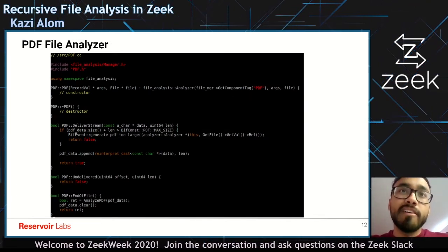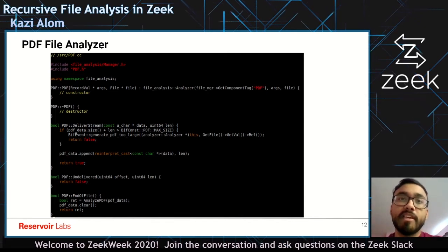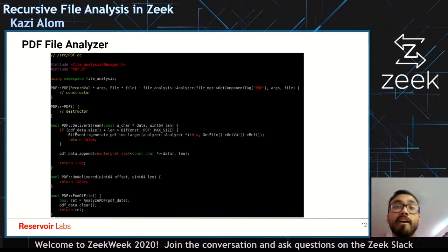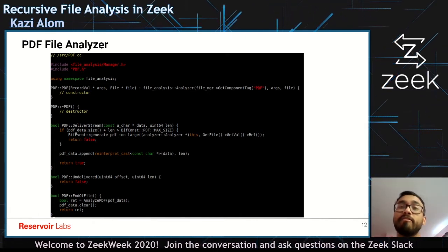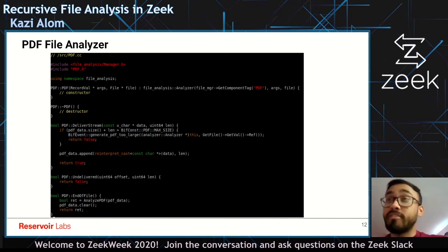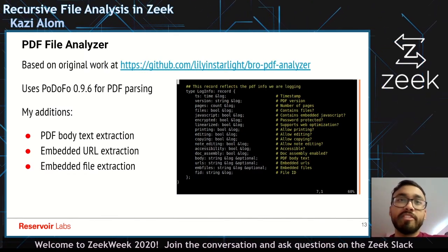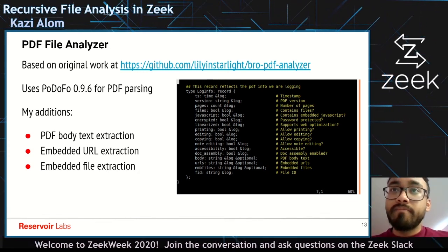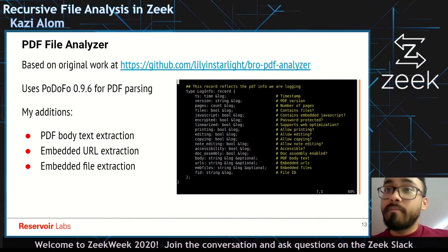I also worked on a PDF file analyzer, and it's very similar. It implements the same three prototypes — deliver stream, undelivered, and end of file — and the only change is that instead of analyzing our buffer as a zip, we analyze it as a PDF. For the PDF file analyzer, the library used is Podofo 0.9.6, and this analyzer is based on an original work, to which I added new features such as full body text extraction, embedded URL extraction, and embedded file extraction. This shows the log record for the PDF with all the metadata fields we can write analytic scripts for.